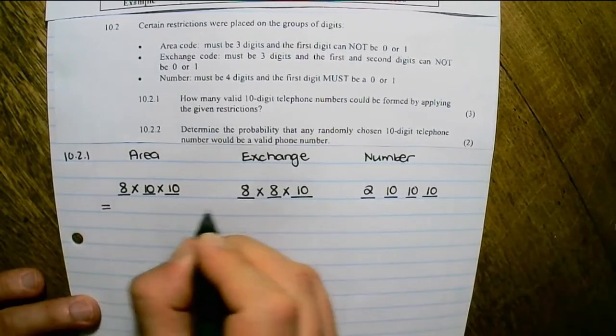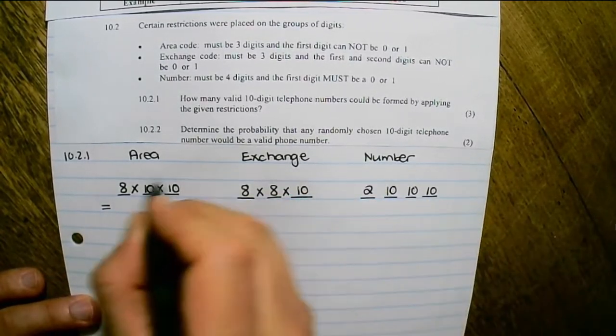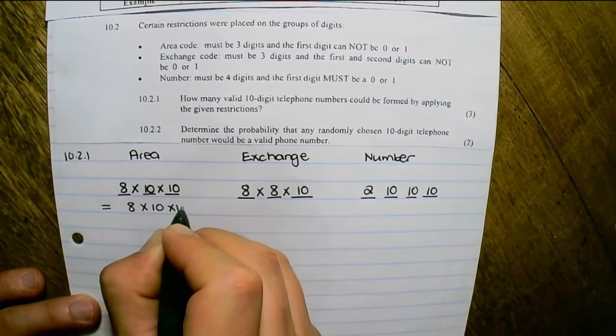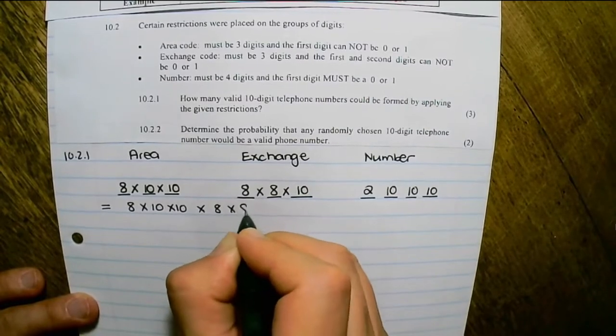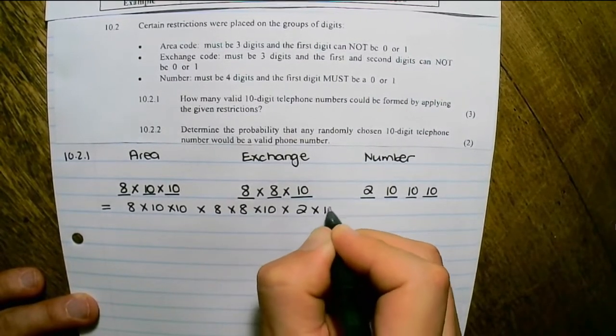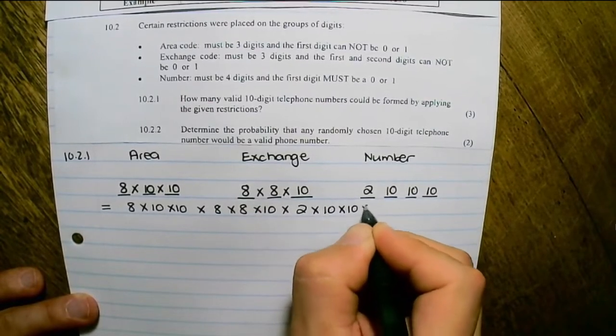Therefore, the total valid number of digits is 8 × 10 × 10 × 8 × 8 × 10 × 2 × 10 × 10 × 10.